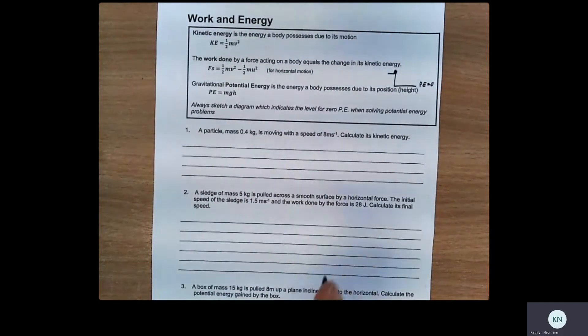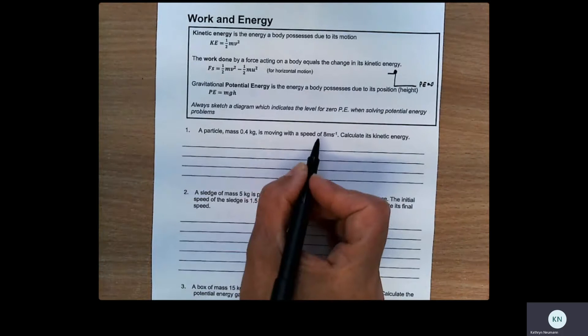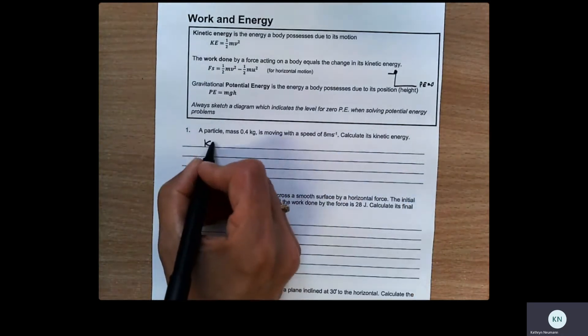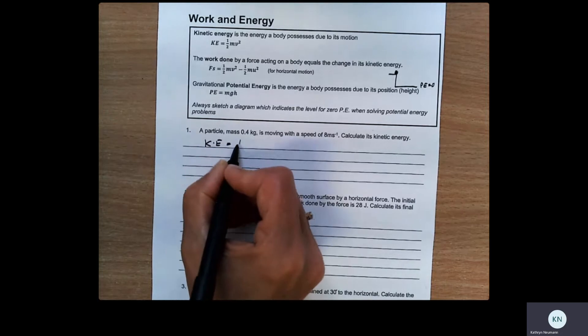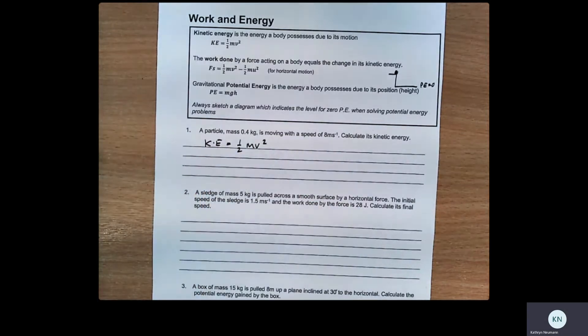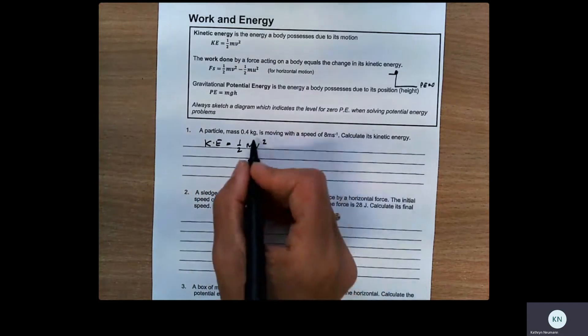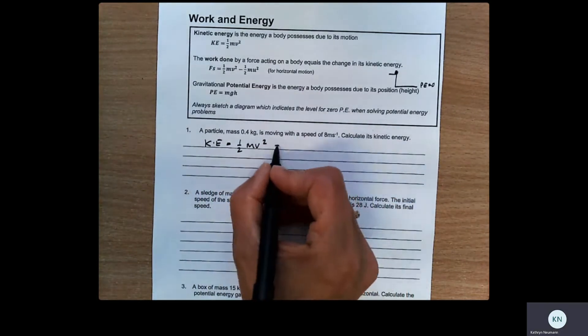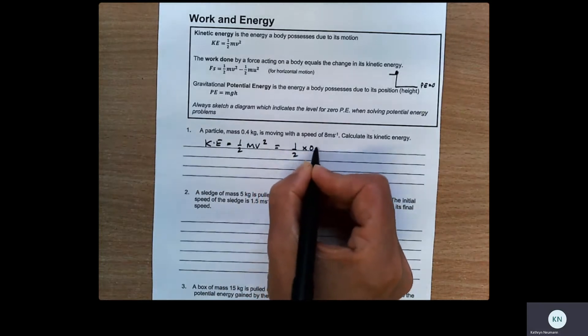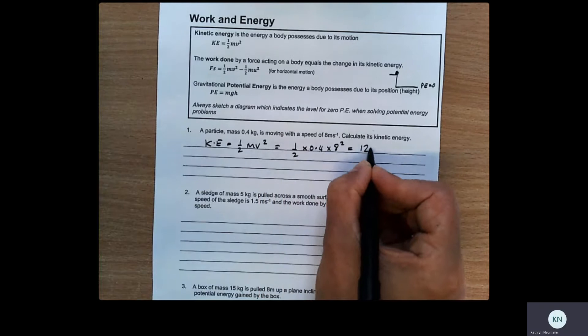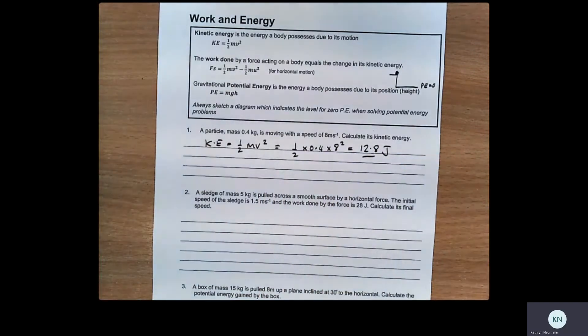We've got a particle of mass 0.4 moving with a speed of 8, calculate its kinetic energy. So kinetic energy is a half mv squared. The only thing you've just got to be a little bit careful of is units that you're in kilograms and meters per second. So this is going to be a half multiplied by 0.4 multiplied by 8 squared. And that gives you 12.8 joules. So that's a very straightforward question.